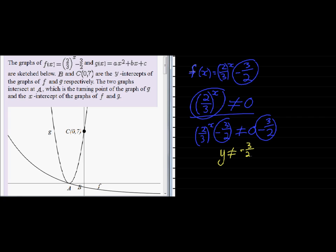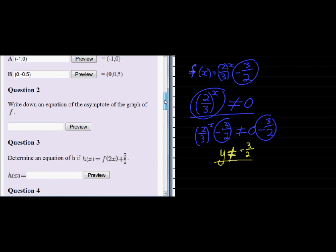Let's go put that answer in. And though this is what Y never can be, we don't use the not equal to sign when we write the equation of the asymptote. So Y is equal to 0 is the equation of the asymptote.